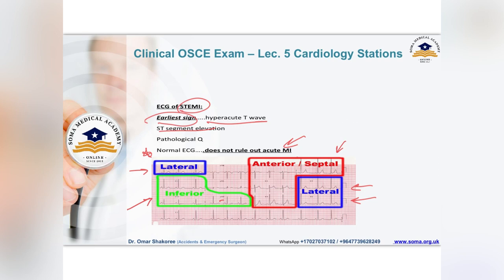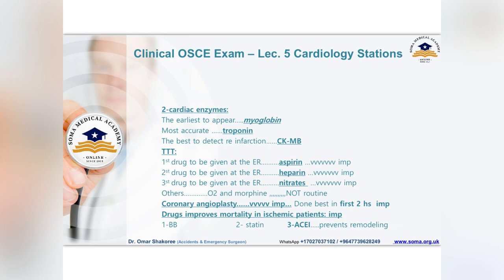You must ask for cardiac biomarkers: myoglobin is the earliest one, troponin is the most accurate, and creatine kinase is the best marker to detect re-infarction later on.